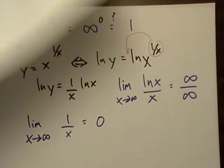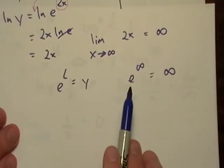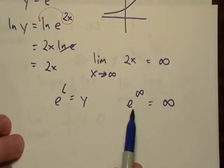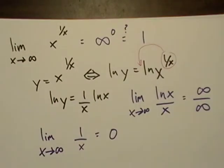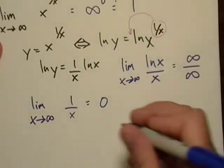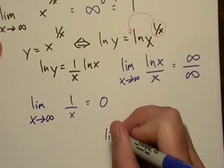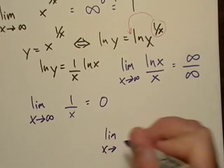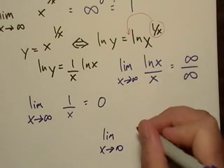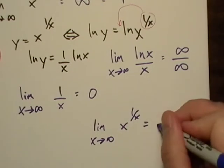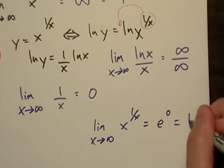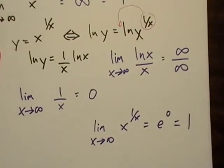So just like from the last problem we worked out, originally we're going to have to re-raise E to this power, because we took the log of it. So our final answer - the limit to this problem is E raised to the 0 power, which is 1.